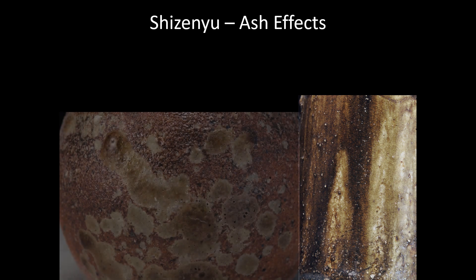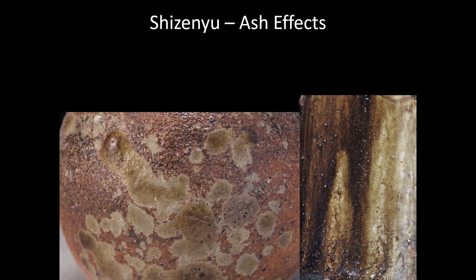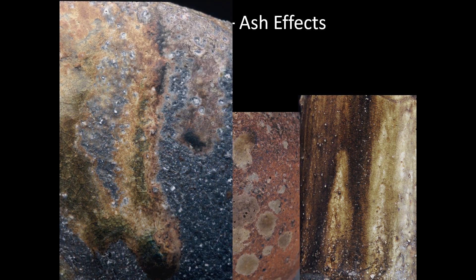The next category of effects is what happens when there's a lot of ash impingement — when a lot of ash falls on the pieces. The Japanese term for ash effects is shizenyu. On the right is a very heavily ashed piece that's melted together and is dripping. On the left is a very special kind of deposit — often referred to as a sesame seed deposit — which occurs early on or very far away from the flame of the kiln. On the left there is also another kind of effect called tamadari.